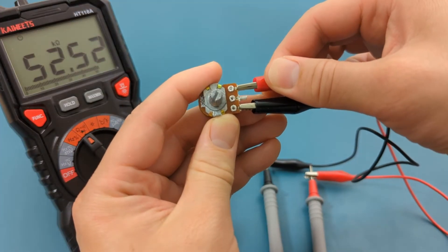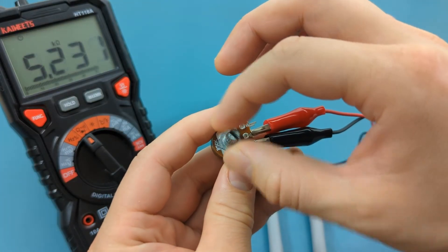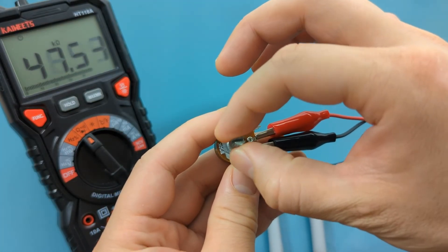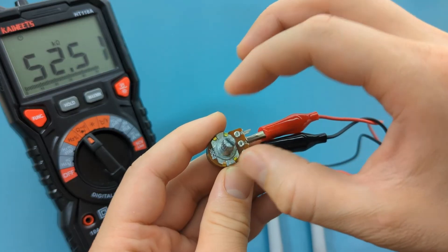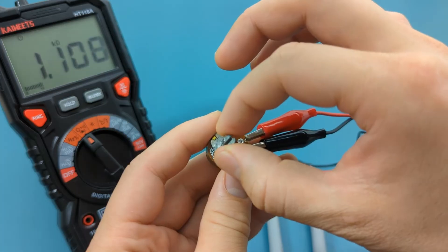Move the red alligator clip to the middle terminal. As you rotate the dial clockwise, the resistance value rises. As you turn the dial counterclockwise, the resistance value drops.